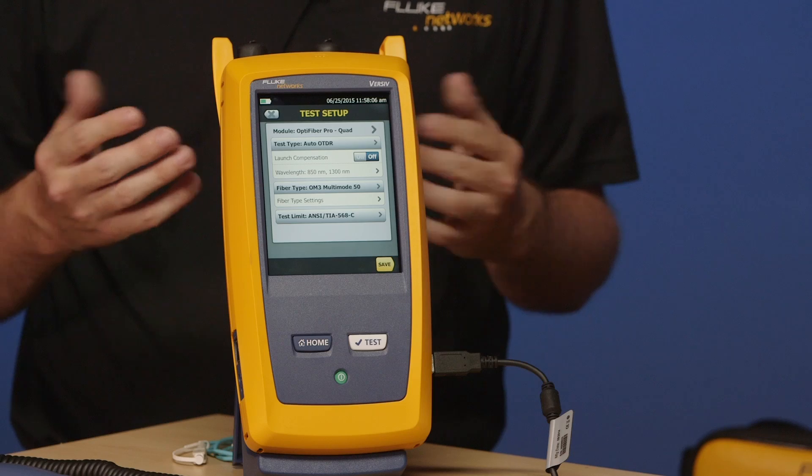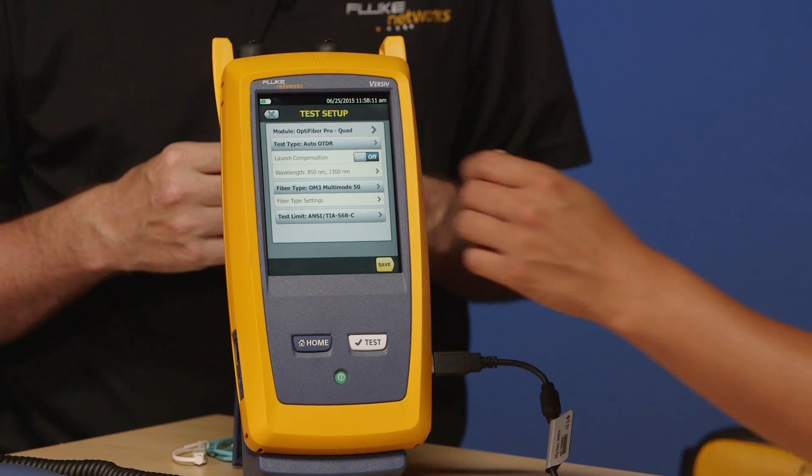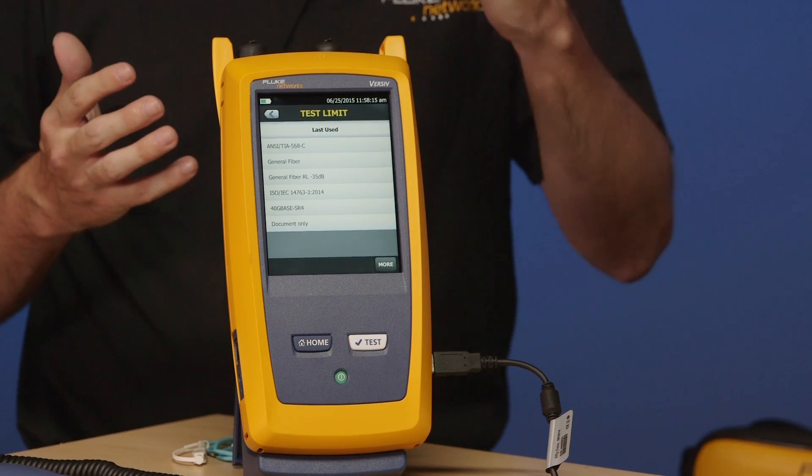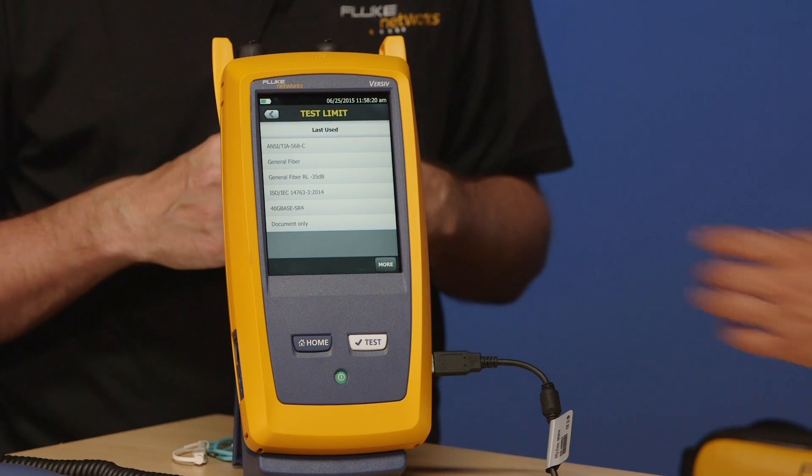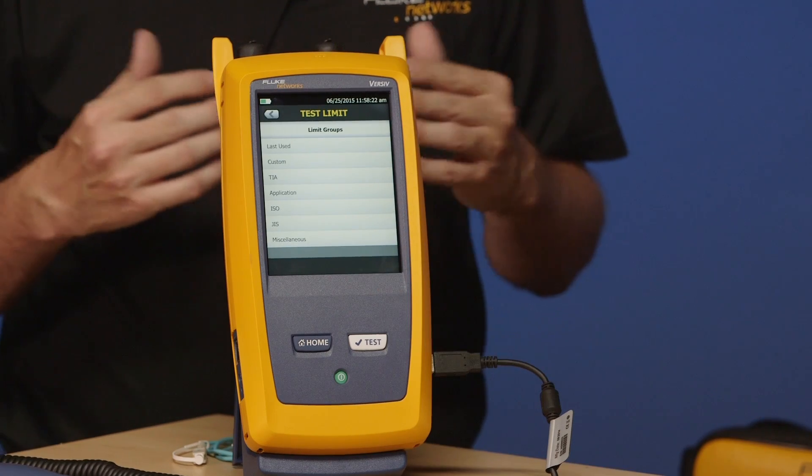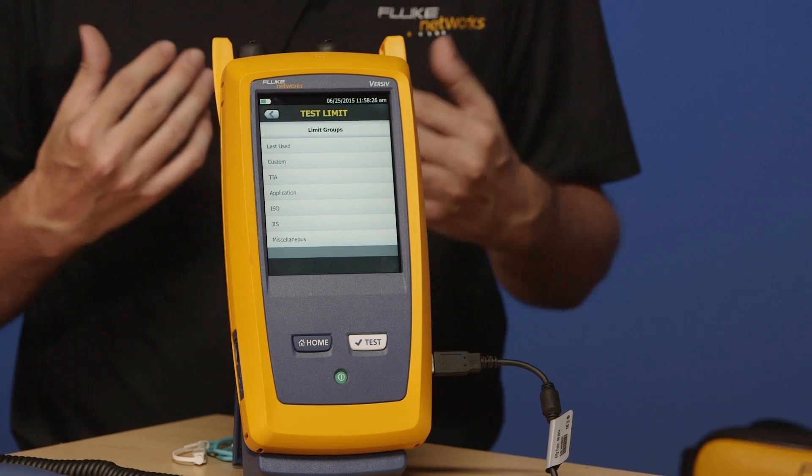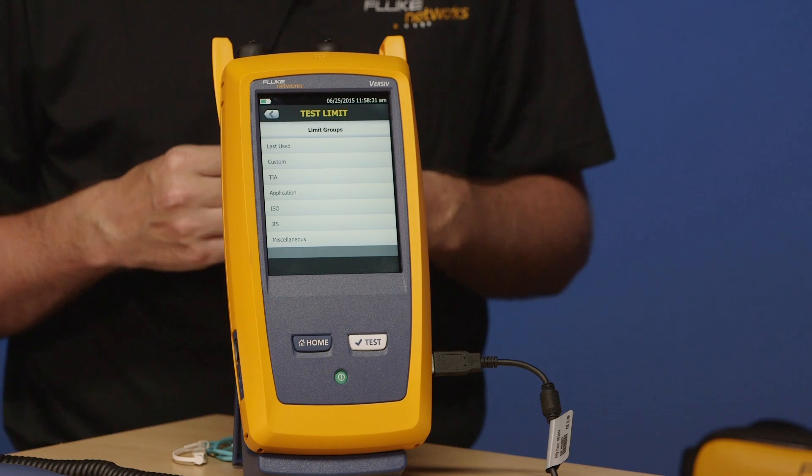And finally, on the list here, probably the most important thing is our test limit. So, go ahead and tap test limit for me. Okay. And so, just as before, we've given you some of the most common setups there. But of course, there's got to be more. So, go ahead and tap more. And here we see the TIA, the ISO folders, the application folders. A very lot of test limits inside this tester. So, check your test specification. With OTDRs, a lot of people like to use their own test limits. And you can do that with the OptiFiber Pro. Go ahead and tap on Custom for me. And, yep. We're going to go and create one.